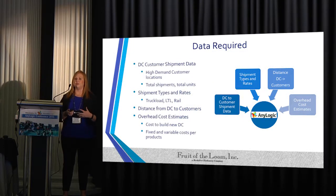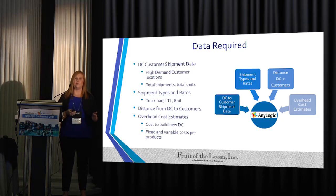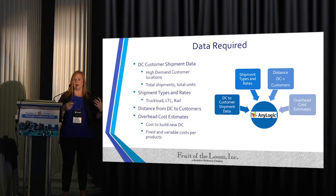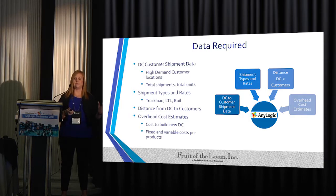We needed to use GIS to look into the original distance from the DC to the customers. We also had to have overhead cost estimates to understand what it actually costs to build a new DC — the fixed and variable costs of operating a new DC in terms of keeping the lights on, staffing that DC, and what it costs to make the product. All of those were different inputs into the AnyLogic simulation.